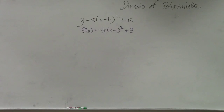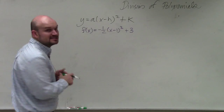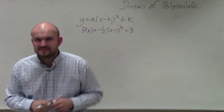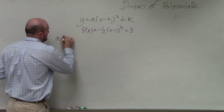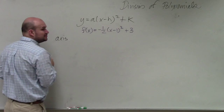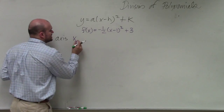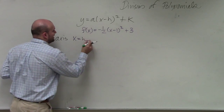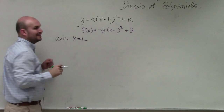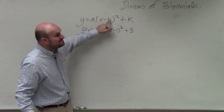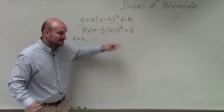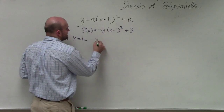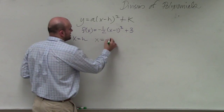So a couple things. I asked you guys to find the axis of symmetry. So the axis of symmetry — ladies and gentlemen, you should remember that the axis of symmetry is just x equals h. It's x minus h. So therefore, it's x minus 1, and this equation is x equals negative 1.